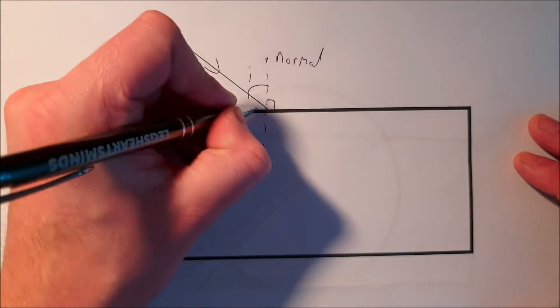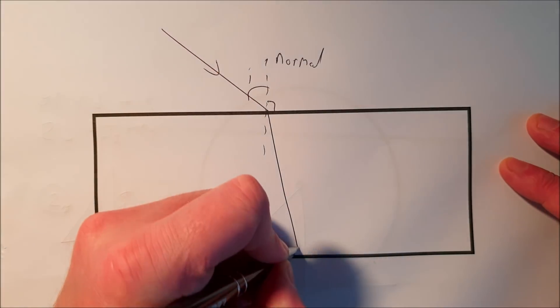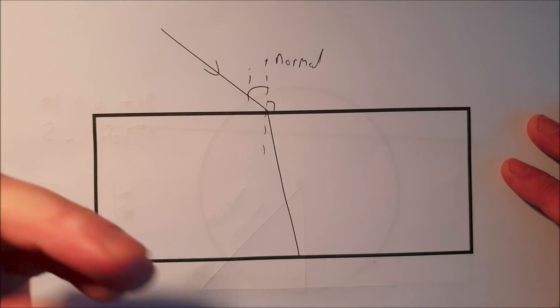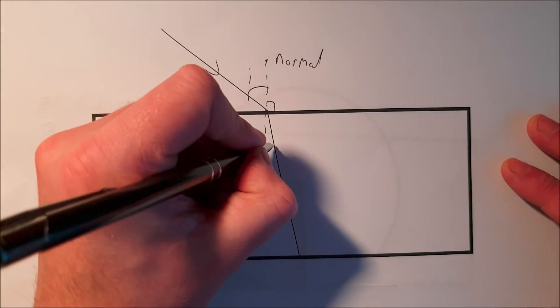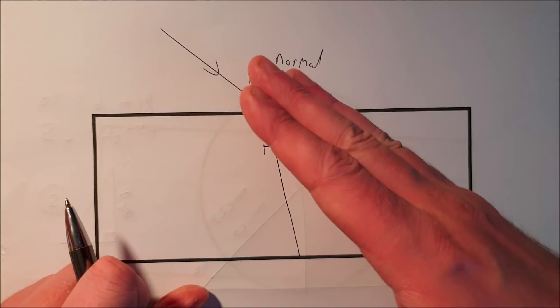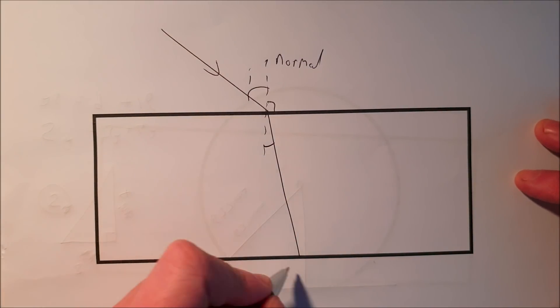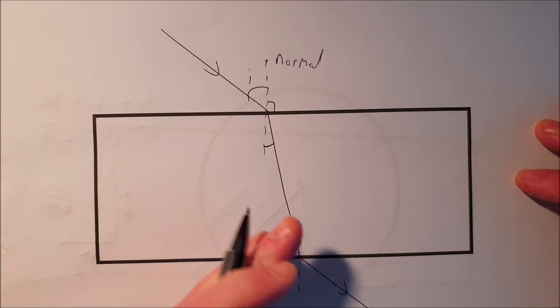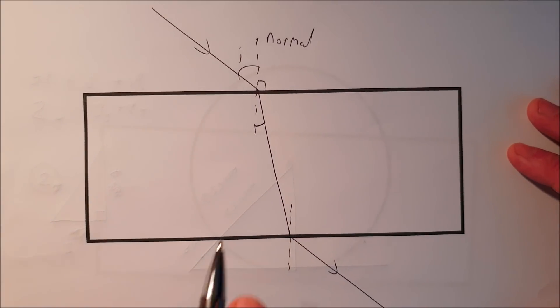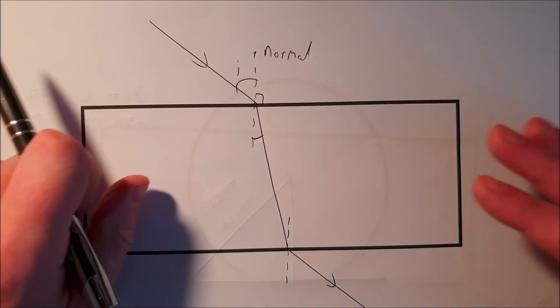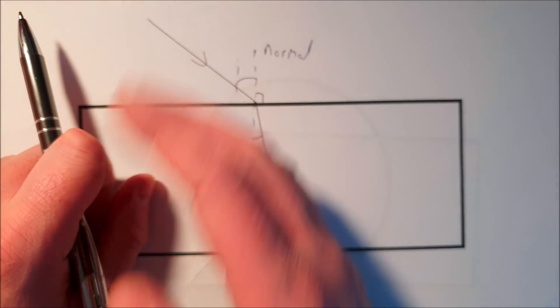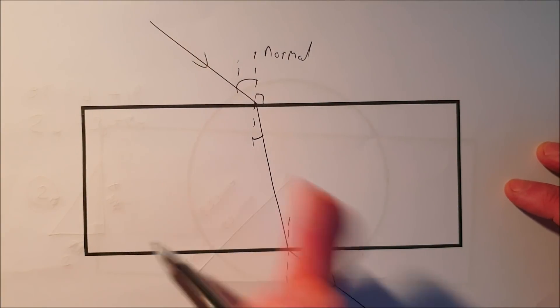This is really important because when the light enters the glass and slows down - it's entering something more optically dense - it will move towards that normal line. When it leaves the glass, it will speed up and move away from the normal line. This is so important for mirages. When it slows down, it moves towards normal. When it speeds up again, it moves away from the normal.